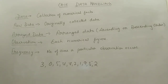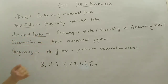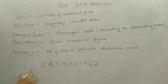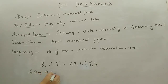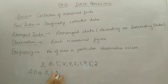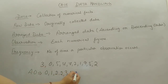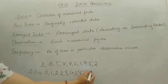Next thing is arranged data. Arranged data means if we arrange the data in ascending or descending form. Suppose this data, if I arrange in ascending order — small to big — so first 0 is here, then 1, then 2 (two times), then 3, 4, 5, 7 and 9.